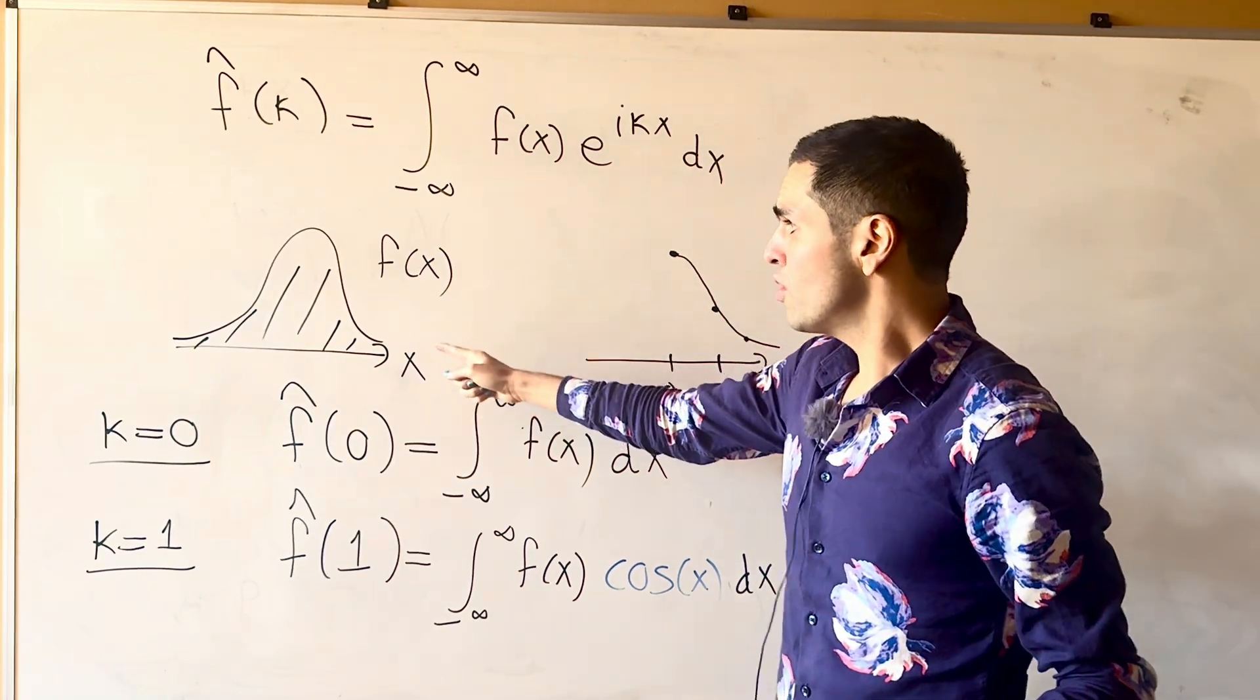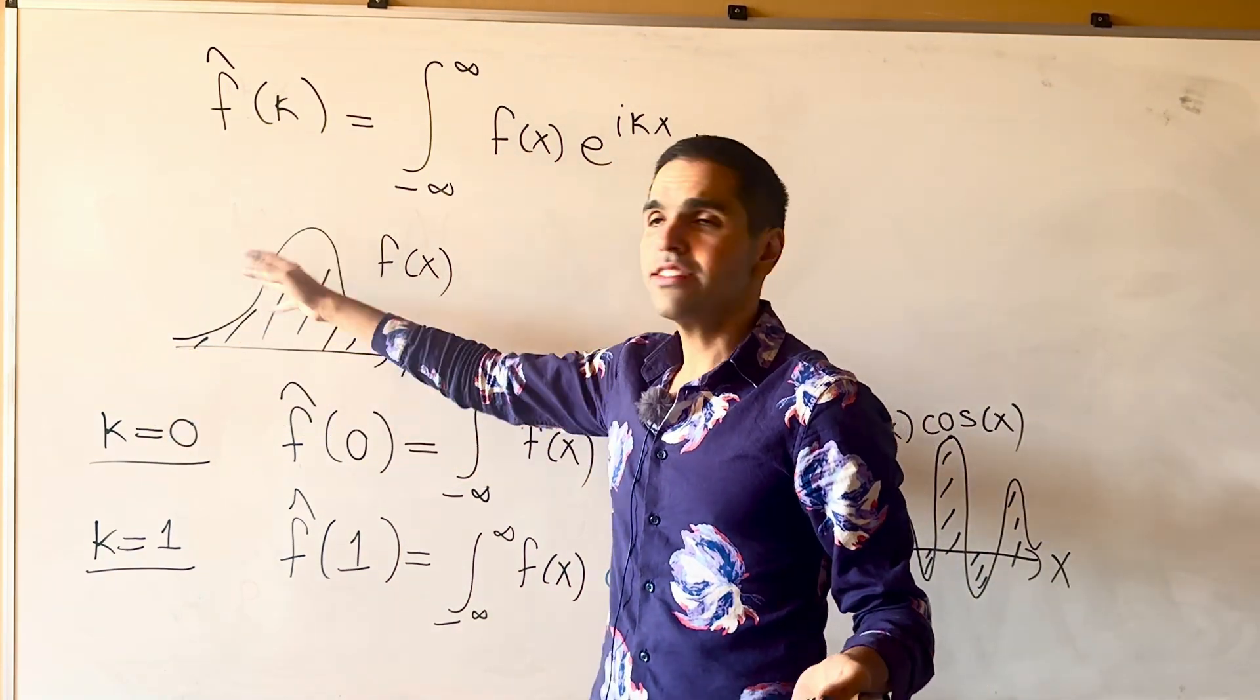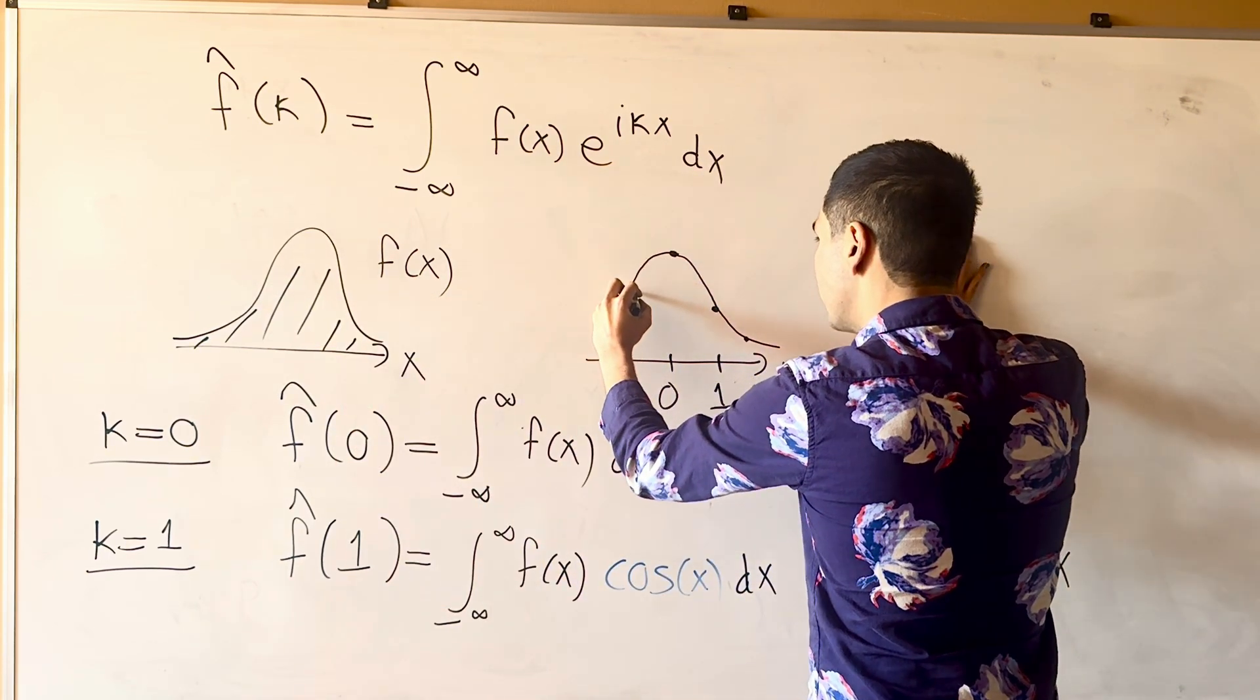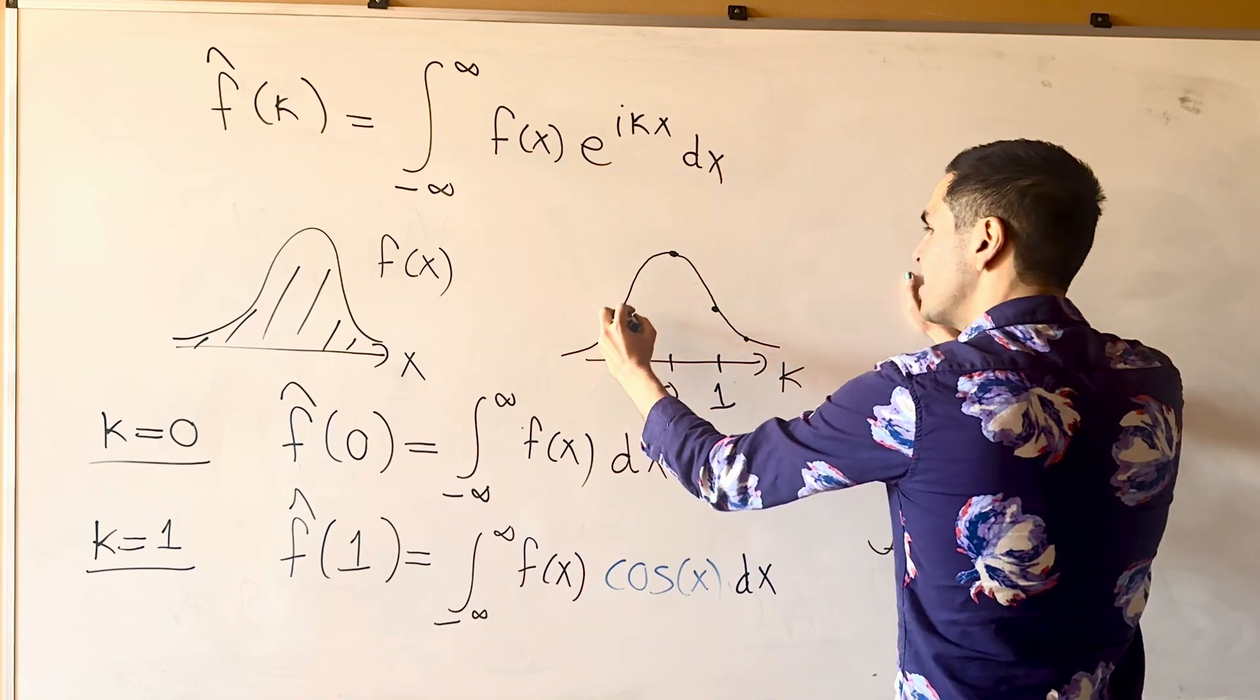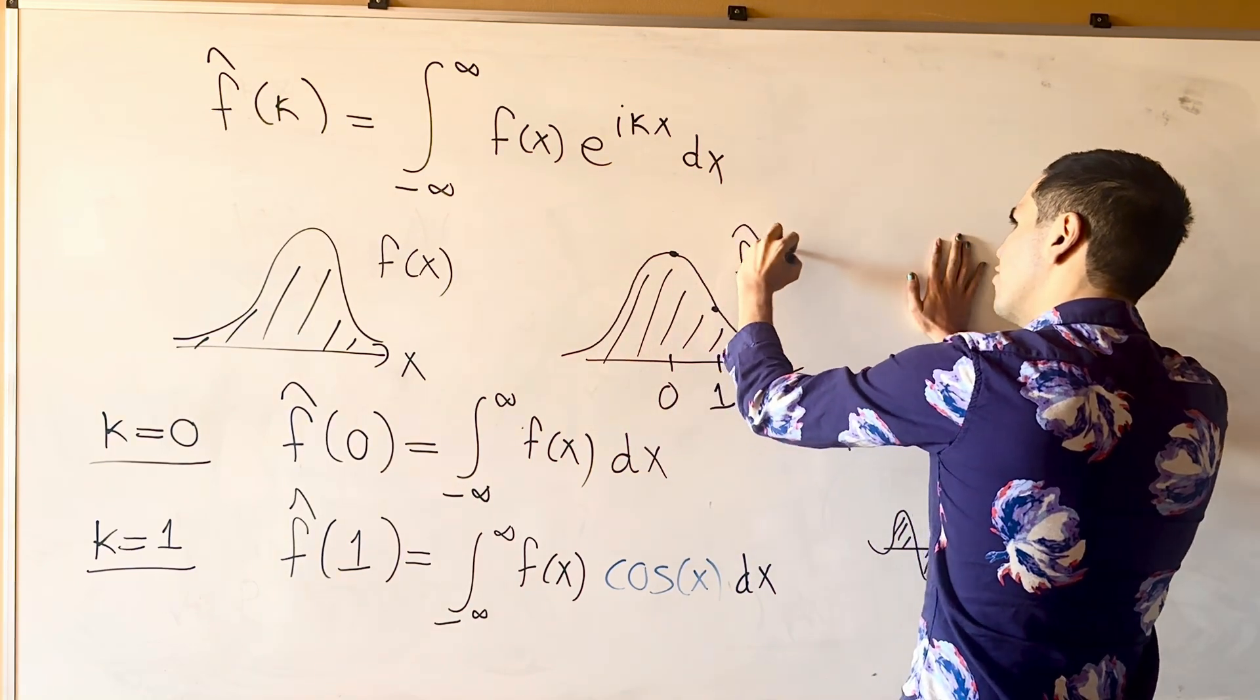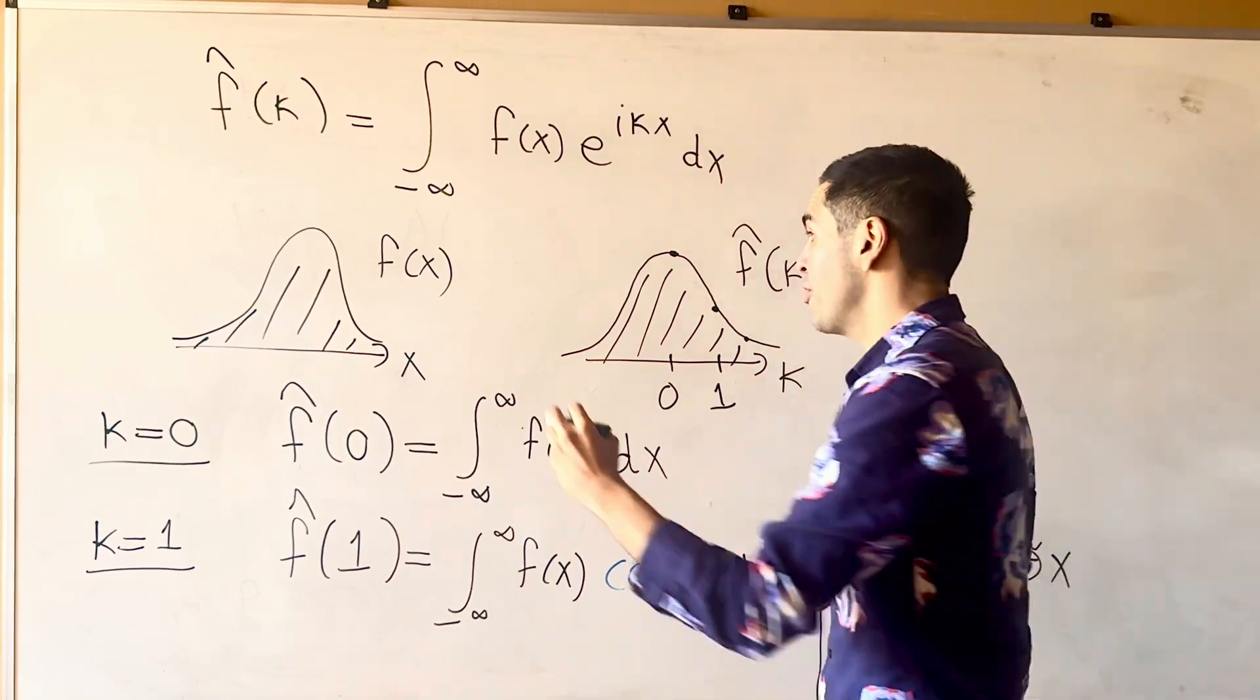And, similarly, if you let kappa be negative. So, here it's symmetric. So, actually, the area also goes down. And, in fact, what's interesting is, you see that now, if you plot f hat of kappa, you get another bell curve.